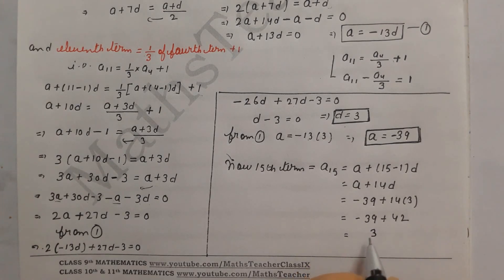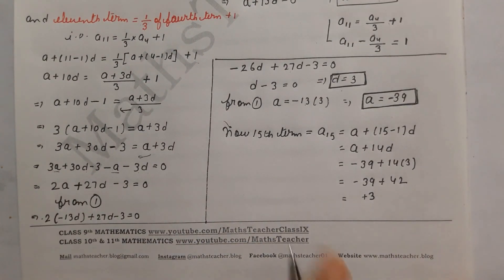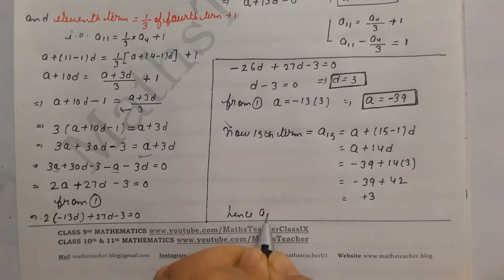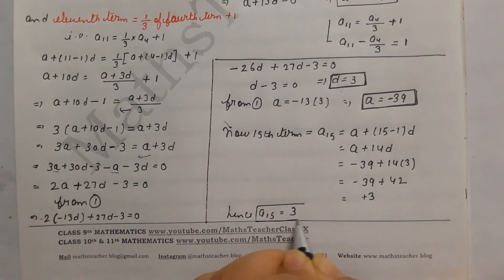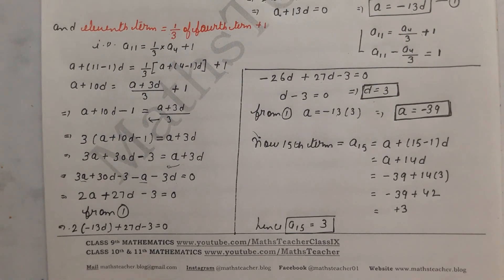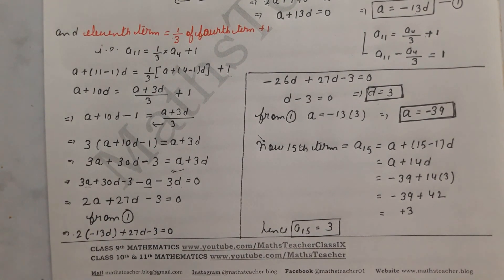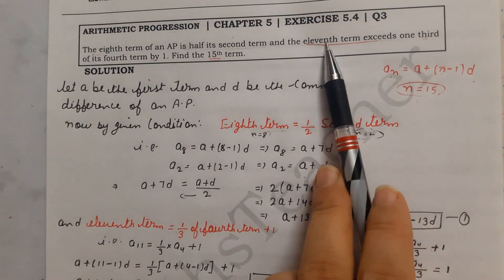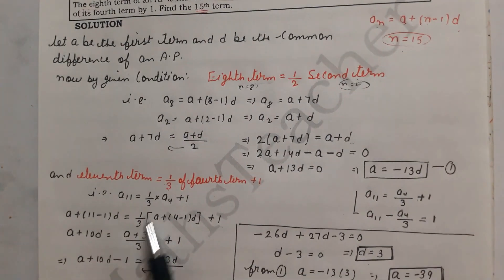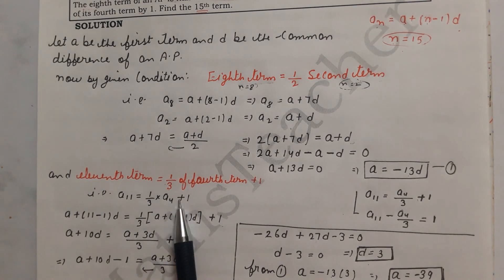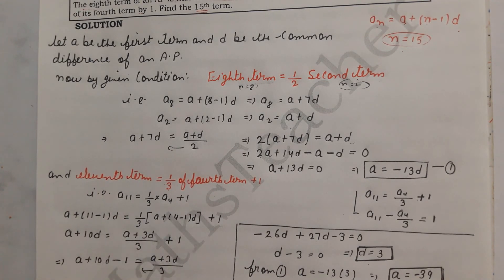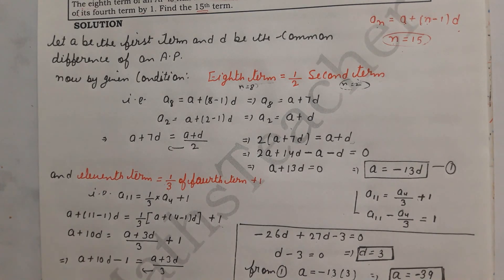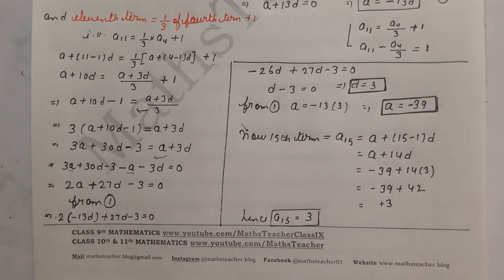So a_15 = −39 + 42 = 3. Hence the 15th term of this AP is 3. The first term is −39, the common difference is 3, and the 15th term is 3. This was a straightforward question — you just need to read the conditions carefully and form the equations correctly. I hope you understood this solution well. Thank you.